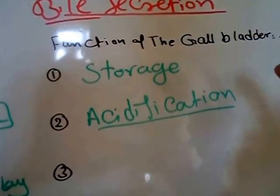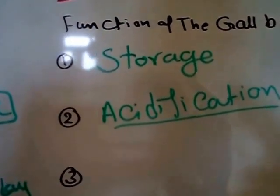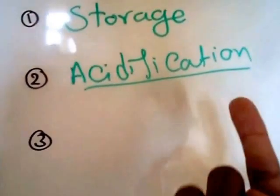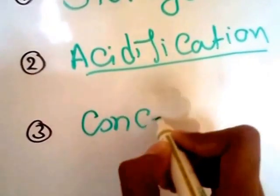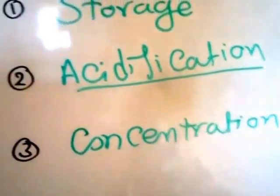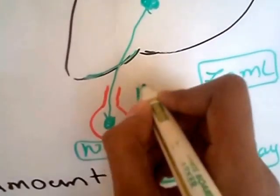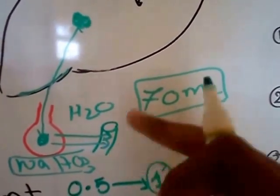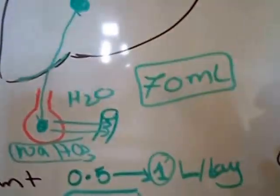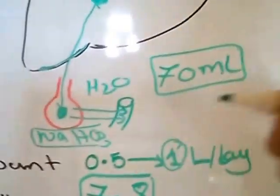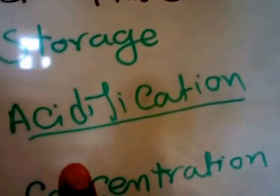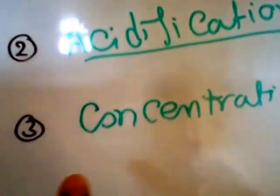So the first function of the gallbladder is storage, the second is acidification, and the third is concentration of bile. How are we going to concentrate this bile? By absorbing water — H₂O will be absorbed into the circulation. So I am taking water out of the bile in the gallbladder, making it more and more concentrated. I am also taking sodium bicarbonate to make it more and more acidic. So this is acidification and concentration.